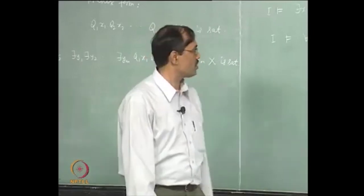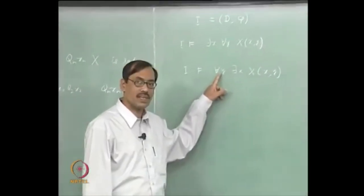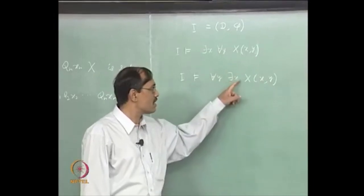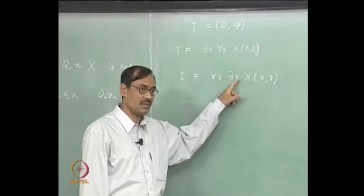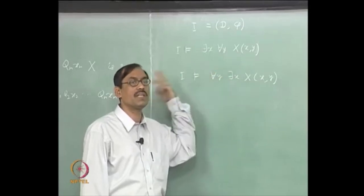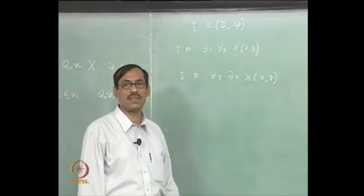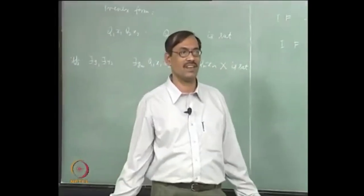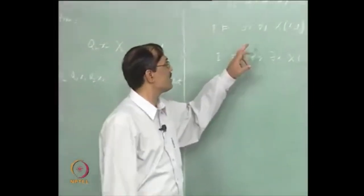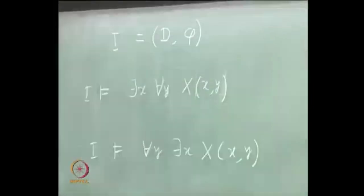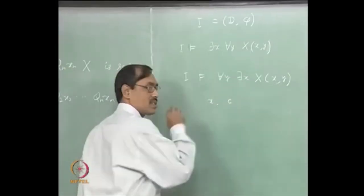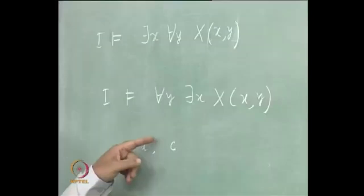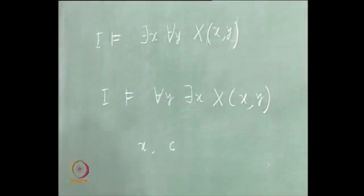If there is a universal quantifier occurring prior to some existential quantifier, then the existential quantifier's variable might depend on the variables used by the universal quantifiers. These two cases — depends or does not depend — have to be clearly demarcated. When it does not depend, for example ∃x ∀y, we might say that instead of x, we replace a new constant c. By 'new' we mean it should not occur in the formula — that is all we need.